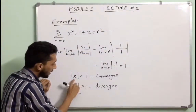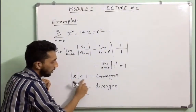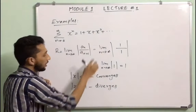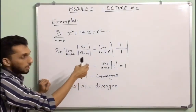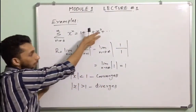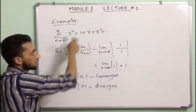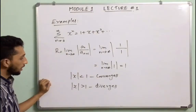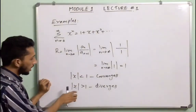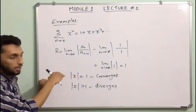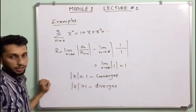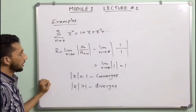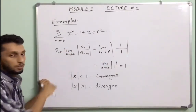When |x| < 1, the power series converges and we obtain a finite sum. When |x| = 1 exactly, we do not discuss that case here. These are the three examples illustrating different types of radius of convergence.